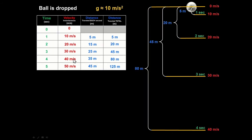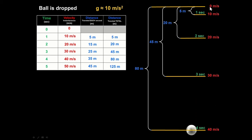Using that chart: if we drop a ball, velocity changes by 10 m/s every second. In one second it falls 5 meters; in two seconds, 20 meters; three seconds, 45 meters; four seconds, 80 meters.